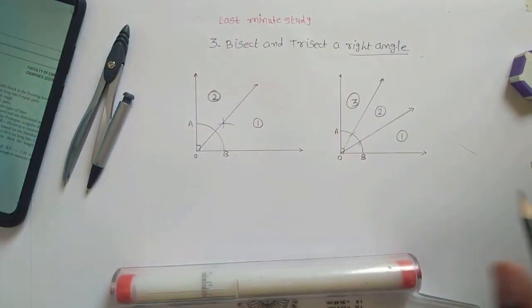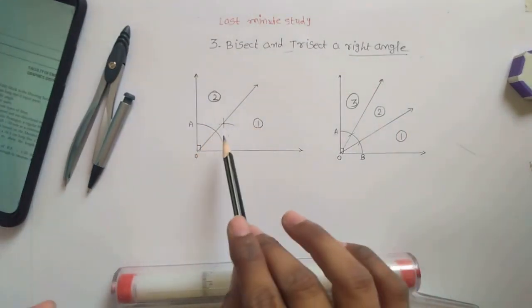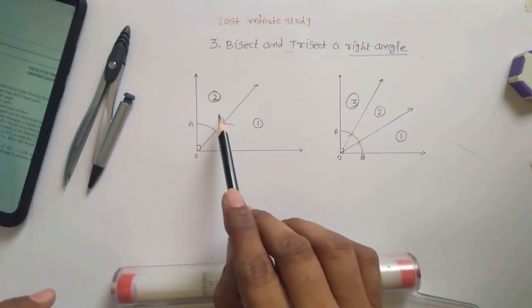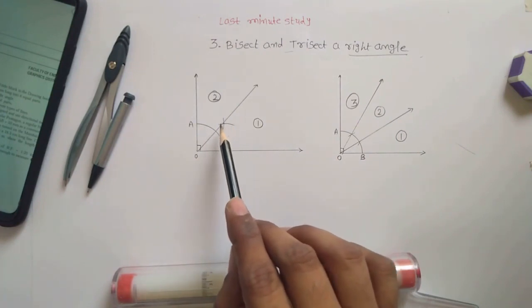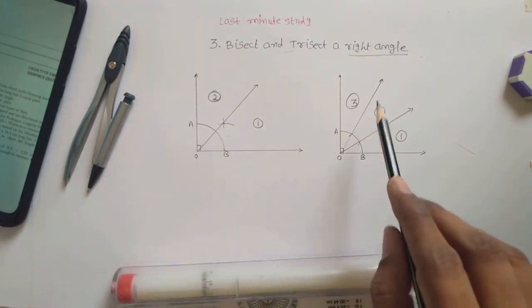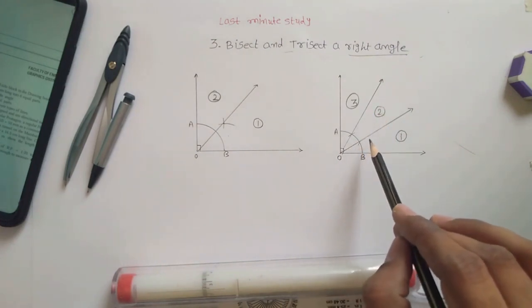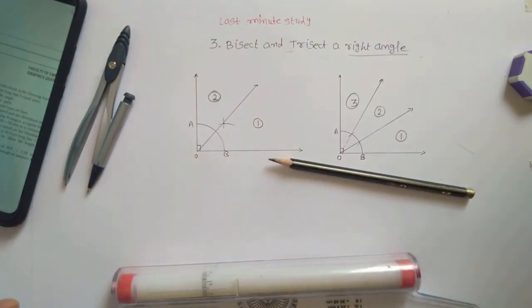So this is how you bisect and trisect a right angle. The only difference is in bisect, you have to make an arc outside this curvature. And in the trisection, you have to put arc on the curve. So this is the only difference. Thank you.